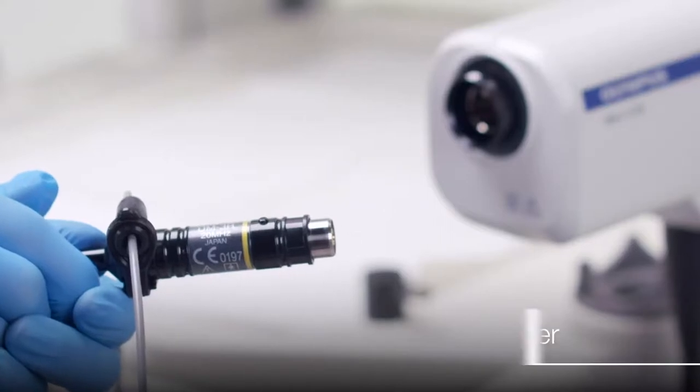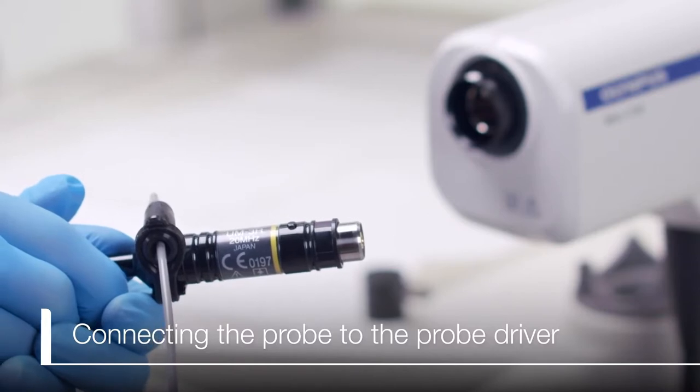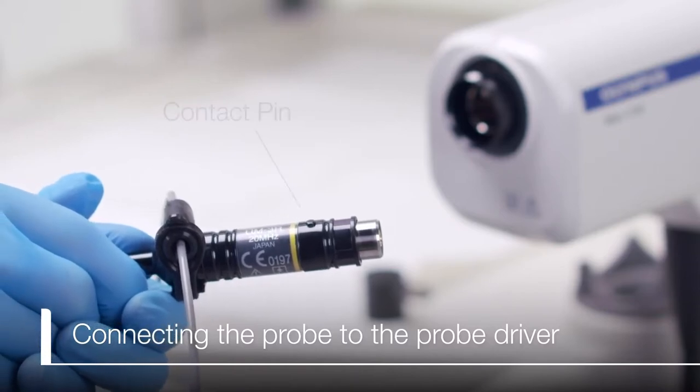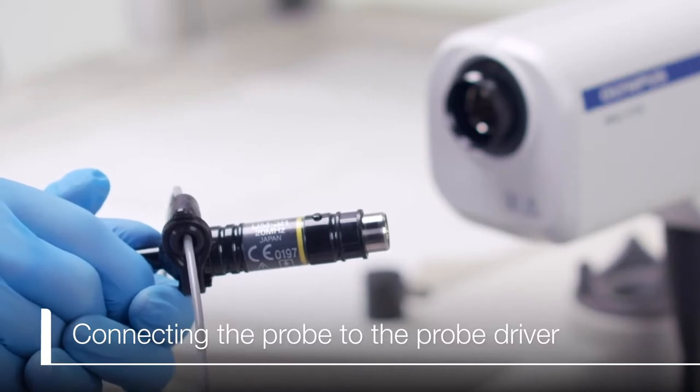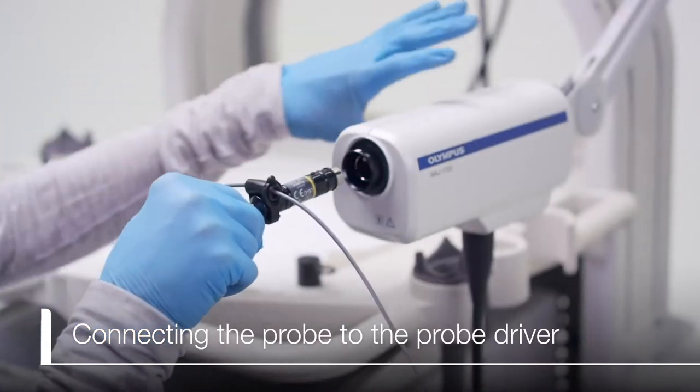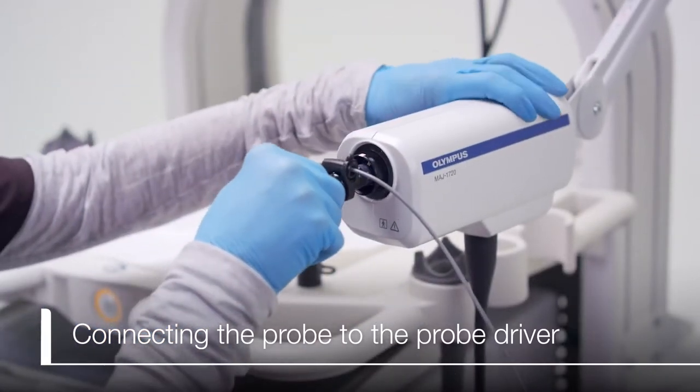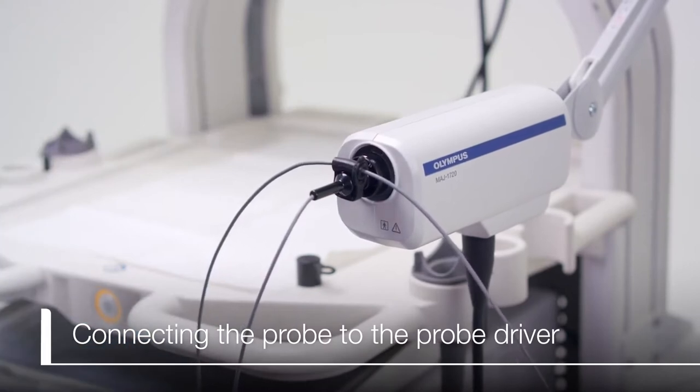Now that we have covered proper storage and components of the probe, let's demonstrate how to connect the probe to the probe driver. The probe connector has a contact pin. The probe driver has a groove in the top of the internal cylinder. With the contact pin facing up, align the contact pin to the groove and the connector should easily slide straight into the probe driver. You should not have to force it.